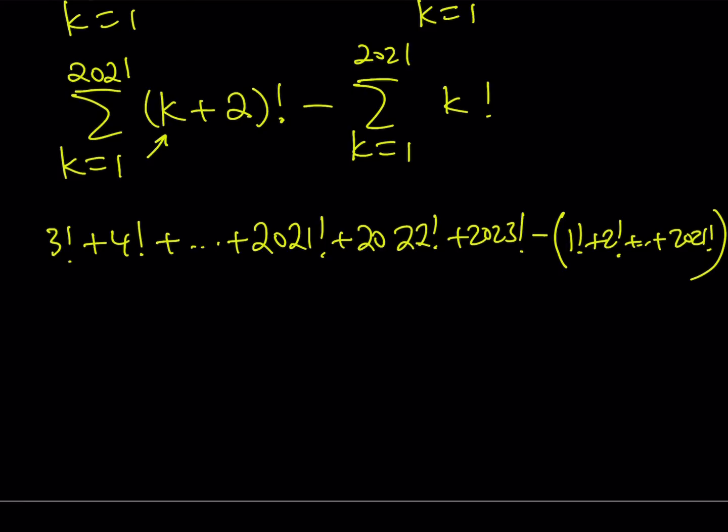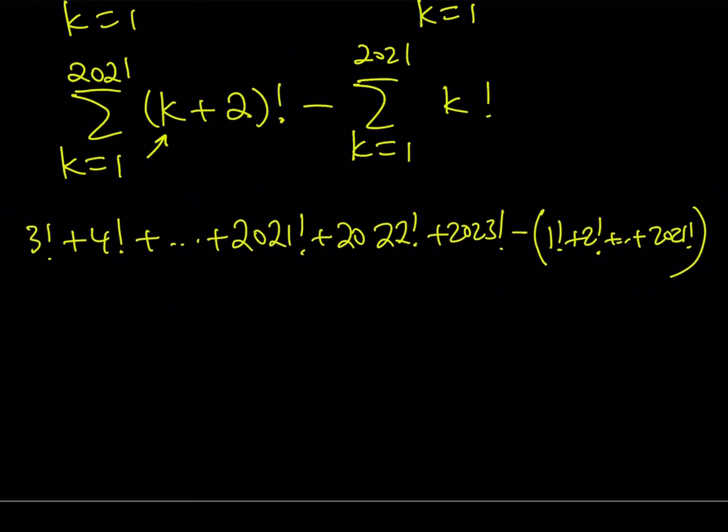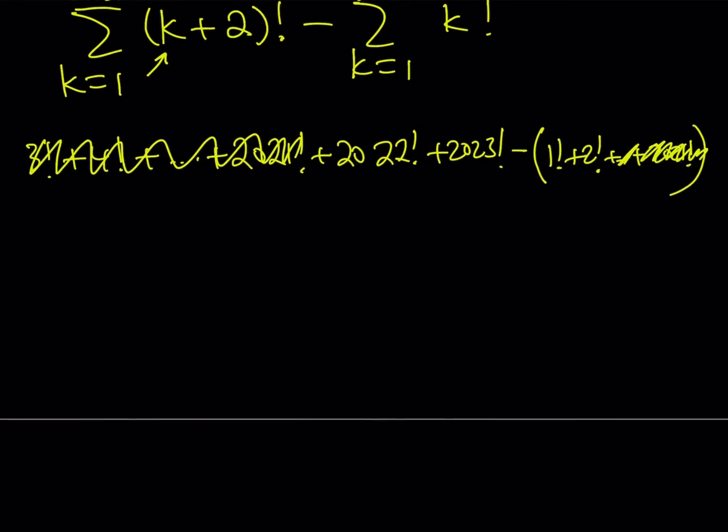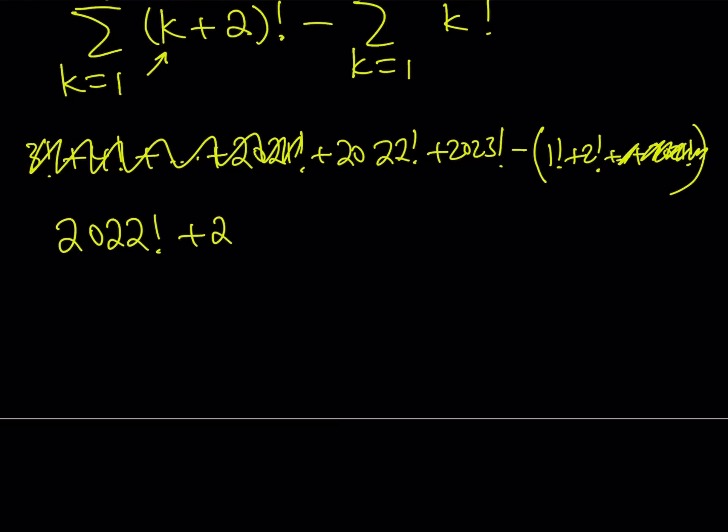Now we have the following sums and the difference. A lot of terms are going to cancel out. Notice that starting with 3 factorial, everything all the way through to 2021 is going to be canceling out. So that leaves us with four terms. That's pretty telescoping. We end up with 2022 factorial plus 2023 factorial minus 1 plus 2, which is obviously 3.